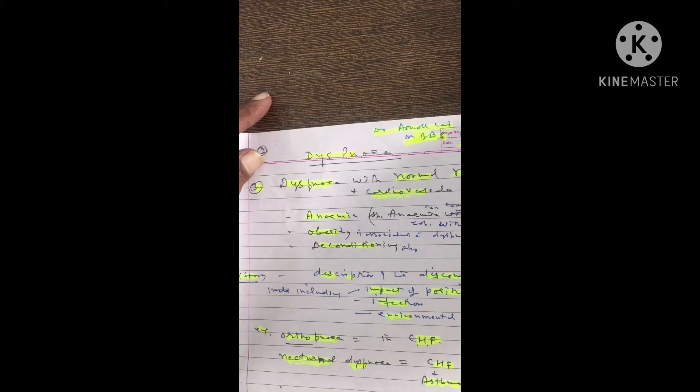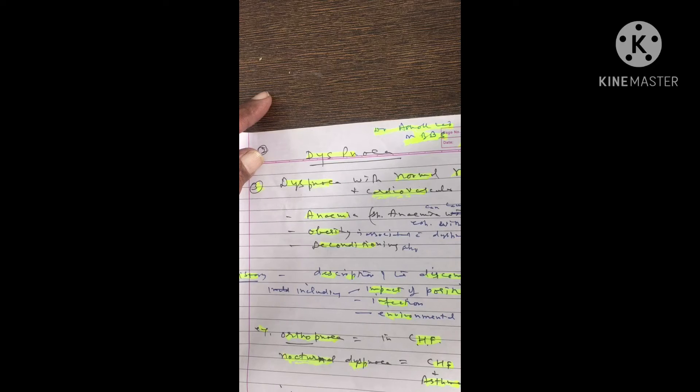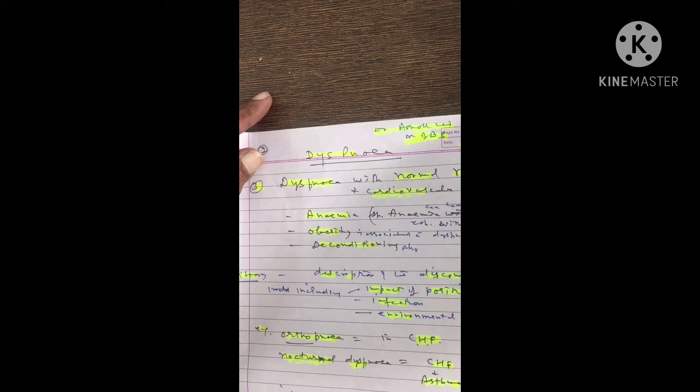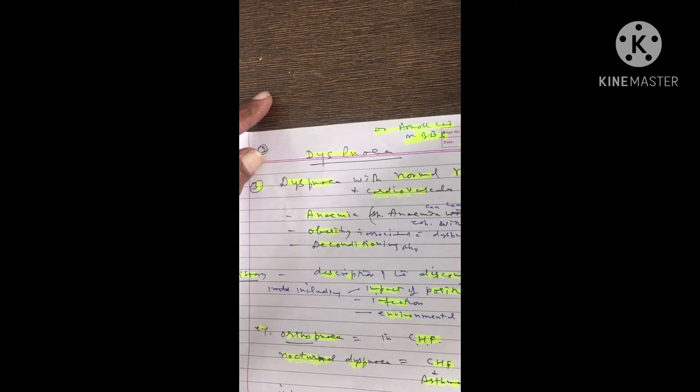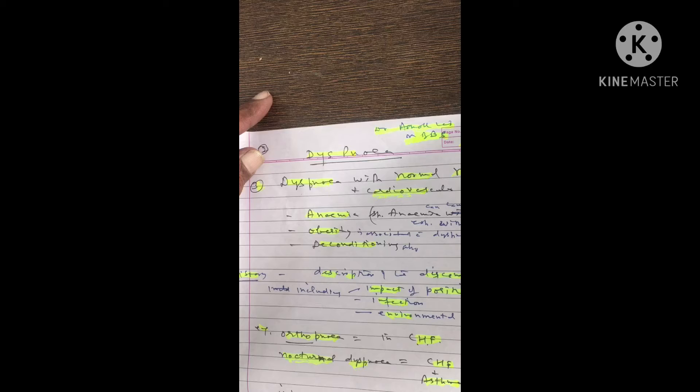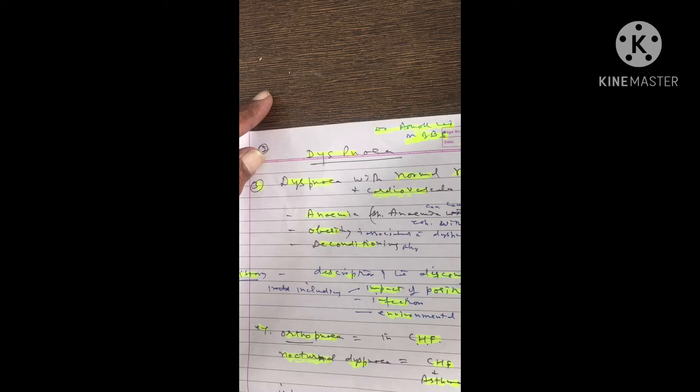Nocturnal dyspnea is when the person is sleeping and feels breathlessness. It is found in CHF and asthma. Then intermittent dyspnea, for example, is found in myocardial ischemia, asthma, or pulmonary embolism.